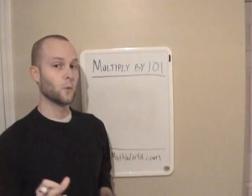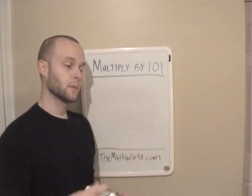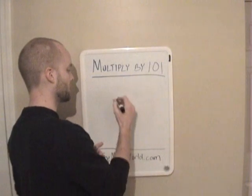Now if we multiply 101 by a three-digit number, we have to do one additional step. So we're going to go over what that looks like.